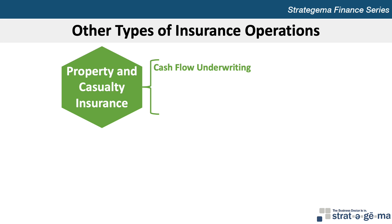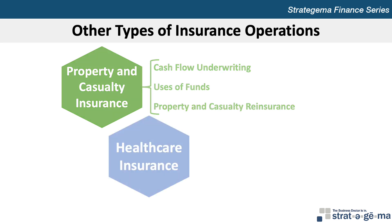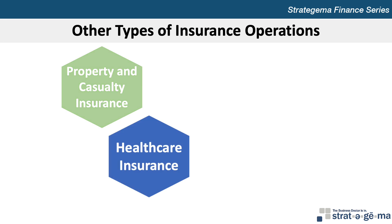As interest rates decline, the price of insurance rises to offset decreased investment income. This method of adapting prices to interest rates is called cash flow underwriting. The primary uses of funds by PC insurance companies are investments in municipal securities and corporate bonds. PC companies commonly obtain reinsurance, which effectively allocates a portion of their return and risk to other insurance companies. Health insurance companies provide health care insurance to households, companies, and government agencies. Insurance companies offer two types of health care plans: managed health care plans and indemnity plans. Individuals who are insured by a managed care plan may choose only specified health care providers who participate in the plan, whereas individuals who are insured under an indemnity plan can choose any provider of health care services.